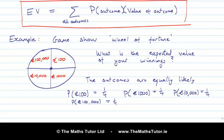And now, the values are clear. The values are the numbers that are given in each of the sectors. And so, now, we just have to apply our expected value formula. So, the expected value, or EV for short, is the sum over all the outcomes of the probability of the outcome times the value.